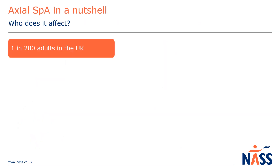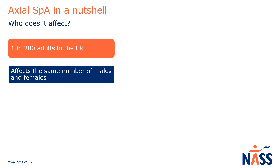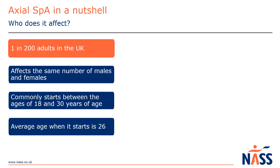Axial SpA is not a rare condition — it affects 1 in 200 adults in the UK. Despite the myth that it's a male condition, axial SpA actually affects the same number of females as males. It's a condition that tends to start when people are younger, often during formative stages of life where you're trying to study, start a career, or form relationships and start families, with the average age of onset being 26.